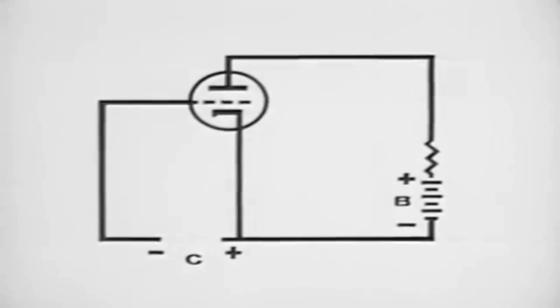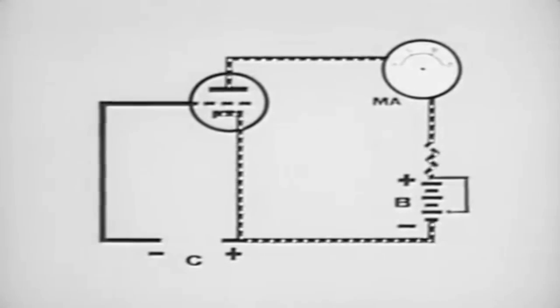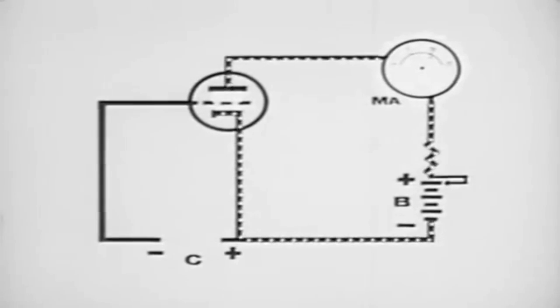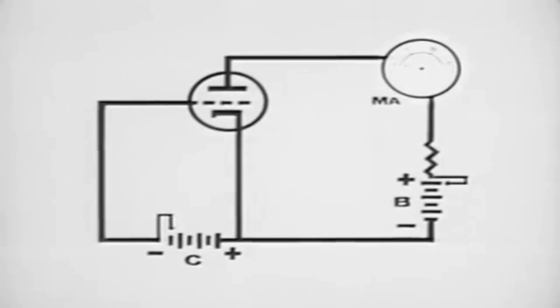The saturation and cutoff voltages can be determined without a manual. A meter in the plate circuit will show how much current will flow when a fixed B plus voltage is applied. If we increase the plate voltage until further increase makes no further change in plate current, the tube is then saturated. Applying a specific negative voltage on the grid decreases the plate current. This negative voltage is increased until the plate current meter reads zero. The tube is now cut off.